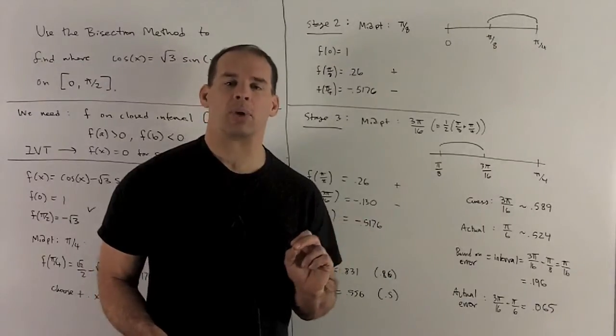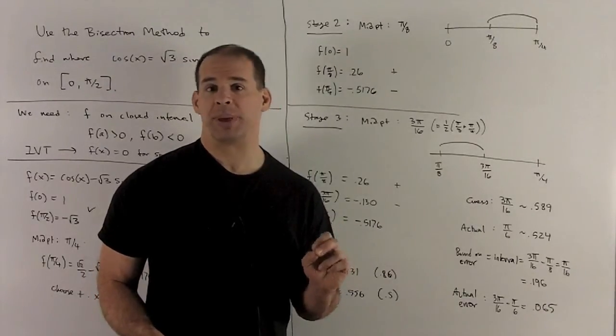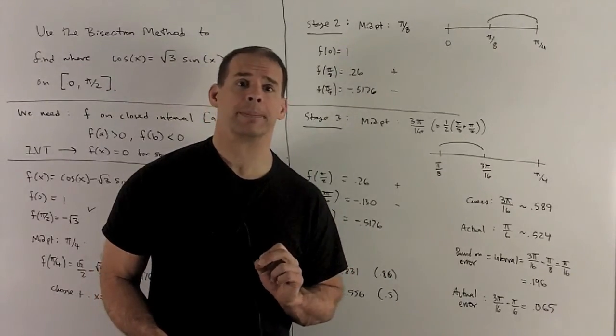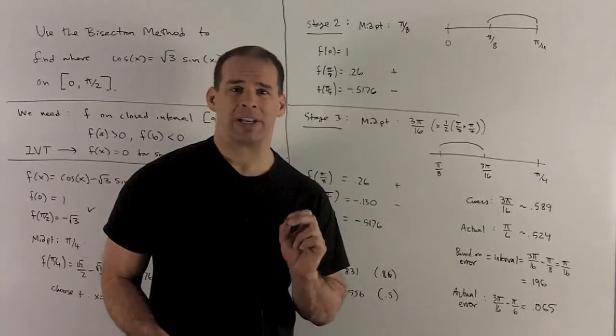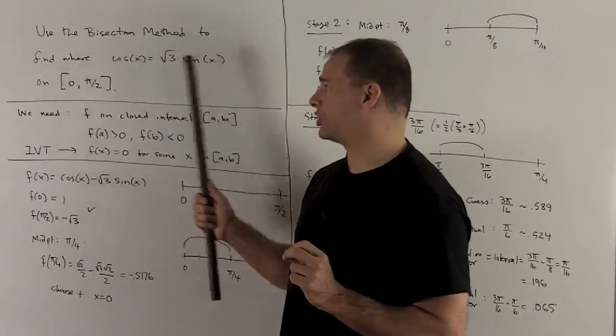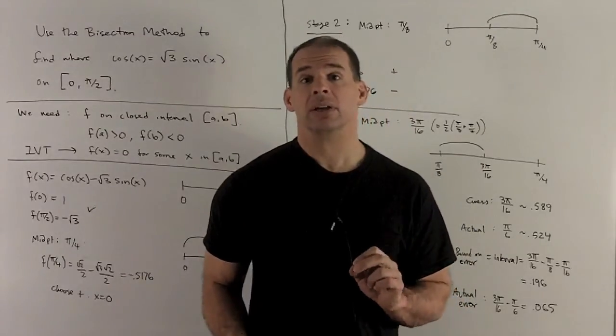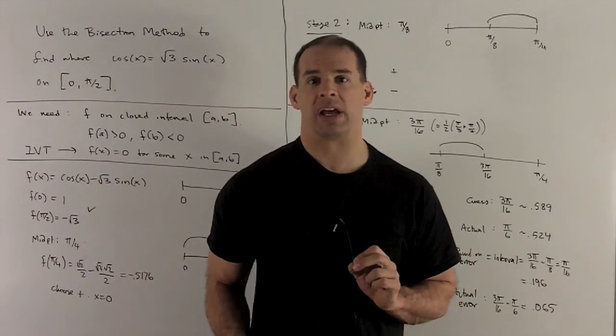So we'd need to do a lot more iterations to sharpen that up, depending on how close we want it to be. So that's your bisection method for solving when the function is not given to you explicitly. So the point here is we had to dig that function out somehow.